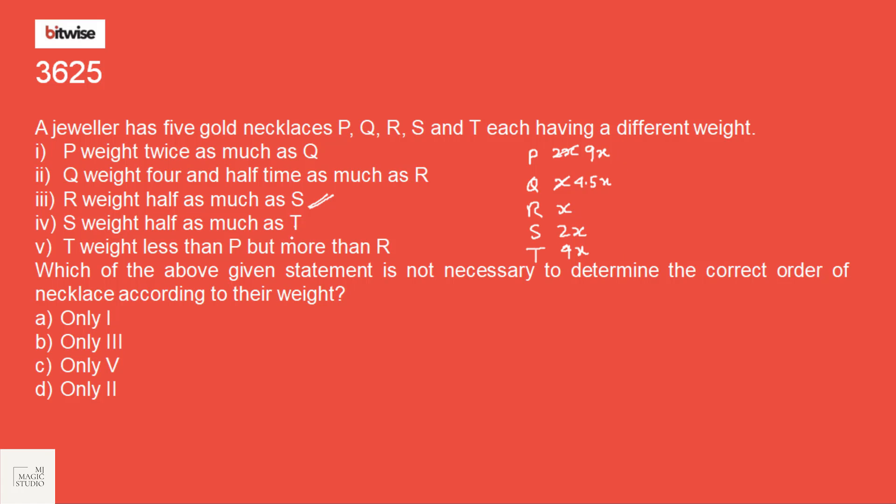Now, fifth statement says T weight less than P. That is also fine. Which of the above given statement is not necessary to determine the correct order of necklace according to the weight? We can see that if statement number 5 is not given, then also we can find the weight of all the 5 necklaces. That means statement number 5 is not required. Option C is the pick.